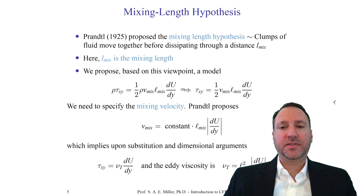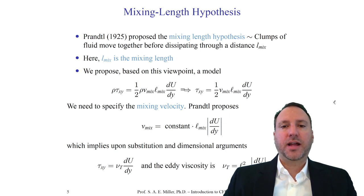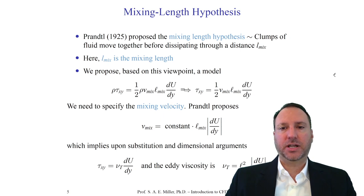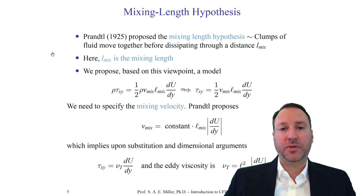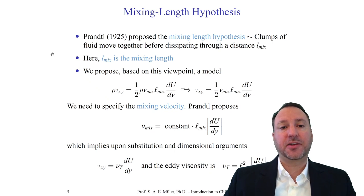Let's look at the very important mixing length hypothesis, proposed by Ludwig Prandtl in 1925 — over a decade after his boundary layer theory. The mixing length hypothesis states that there are clumps of fluid — the large turbulent structures — that move together and dissipate through some distance L-mix, the mixing length. There's a packet of fluid moving along some convection velocity U (the average velocity), and through that process it will dissipate — almost like a time scale of mixing.